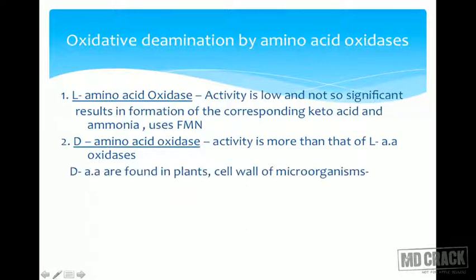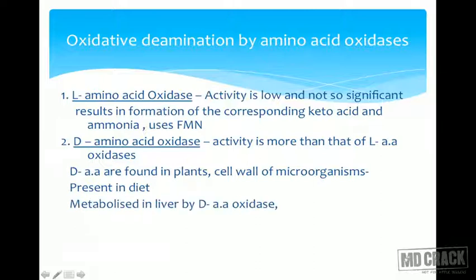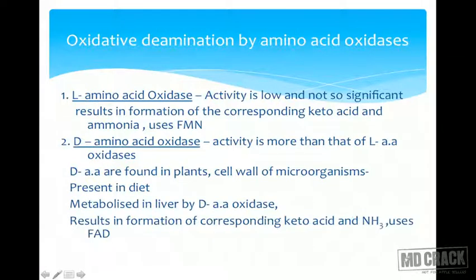Where are D-amino acids formed? Our body is mainly made up of L-amino acids, so D-amino acids are found in plants and cell walls of microorganisms — they are present in the diet and are metabolized in the liver by D-amino oxidase. The difference is that D-amino oxidase results in the formation of the corresponding keto acid and ammonia, but uses FAD, whereas L-amino oxidase uses FMN. This is an important MCQ distinction.